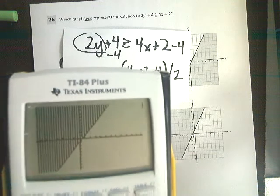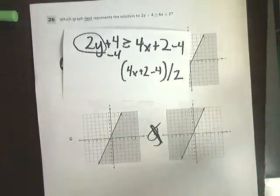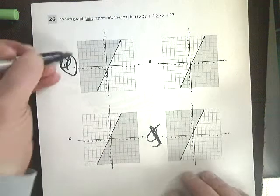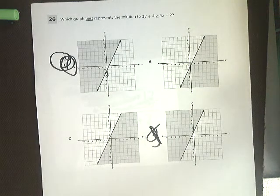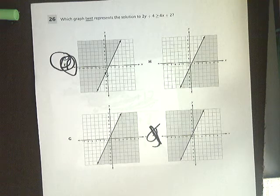And just graph it. And shockingly, it's the same exact graph. So, worst comes to worst, if you can't do anything else, you can still get the answer to be 26 simply by using the information given to you in the question.